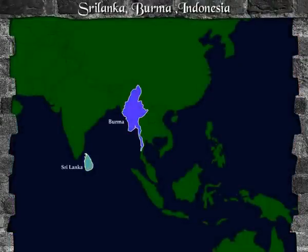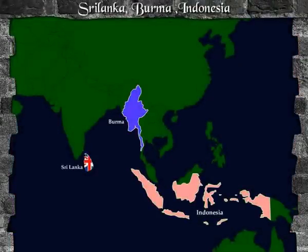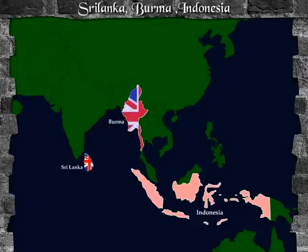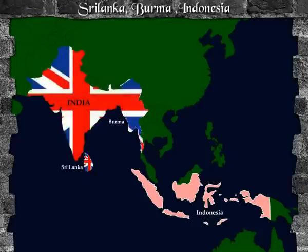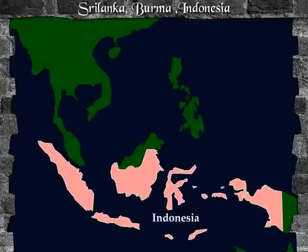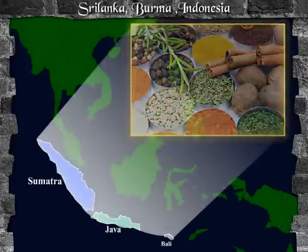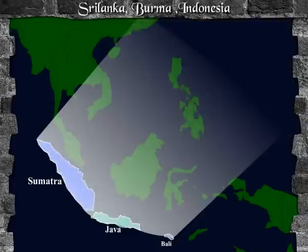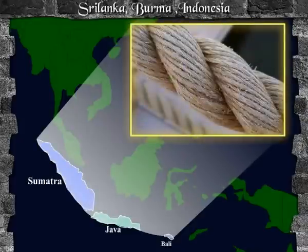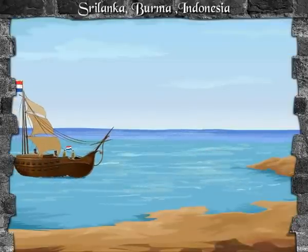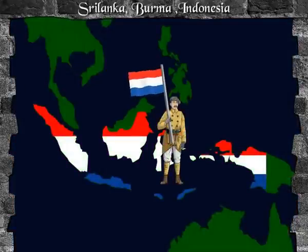Sri Lanka became a crown colony of the British as early as 1798. Britain conquered Burma in 1886 and governed it as a part of the Indian Empire. Indonesia, an archipelago consisting of Sumatra, Java, and Bali, was rich in spices, quinine, rubber, palm oil, and rope fibers. The Dutch came to Indonesia at the end of the 17th century and maintained their hold over this spice land for about three centuries.